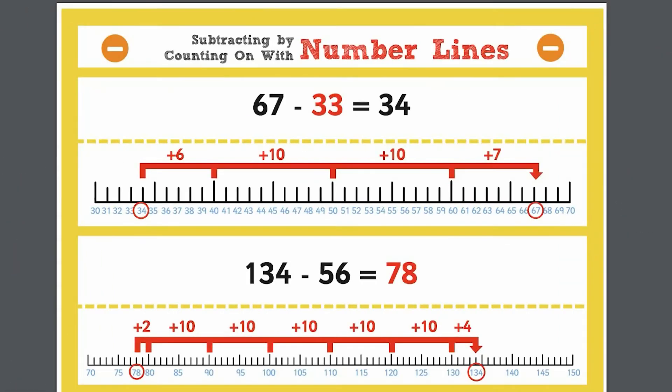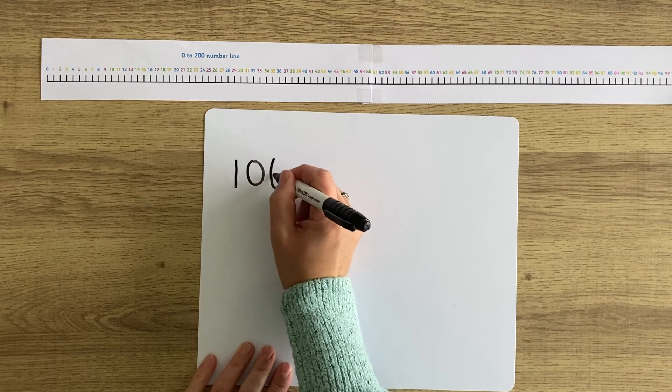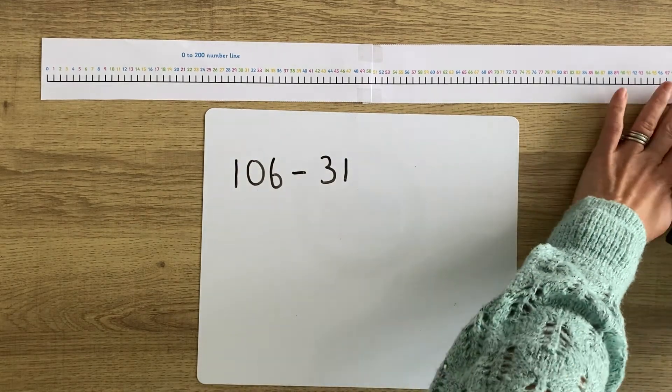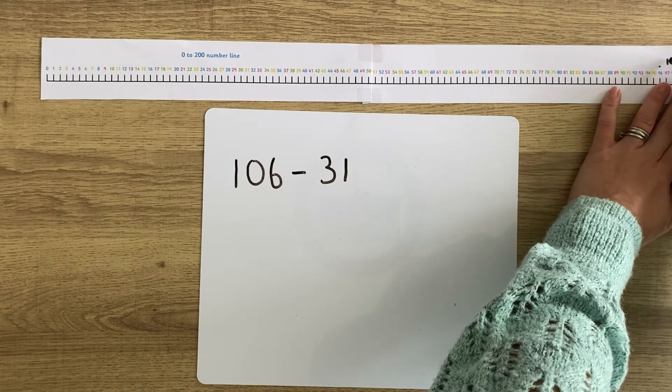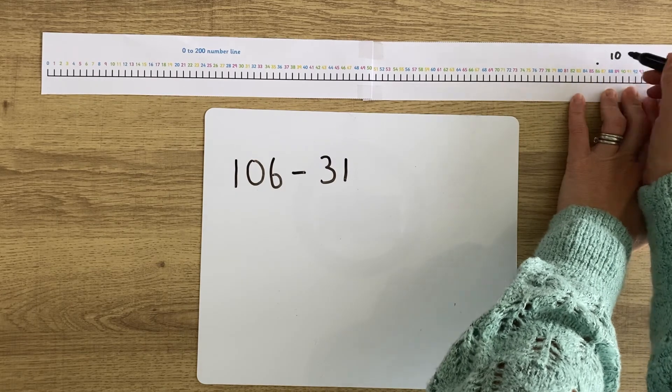We have amazing posters to help you with using a number line for subtracting or adding. This 0-200 number line is great. You could use it to help with addition and subtraction calculations. Why not practice them on a whiteboard?